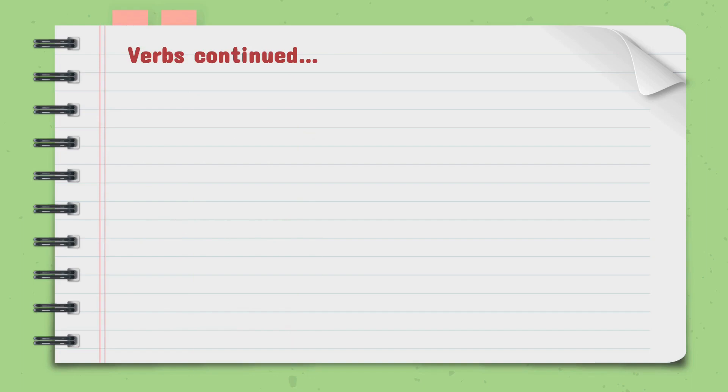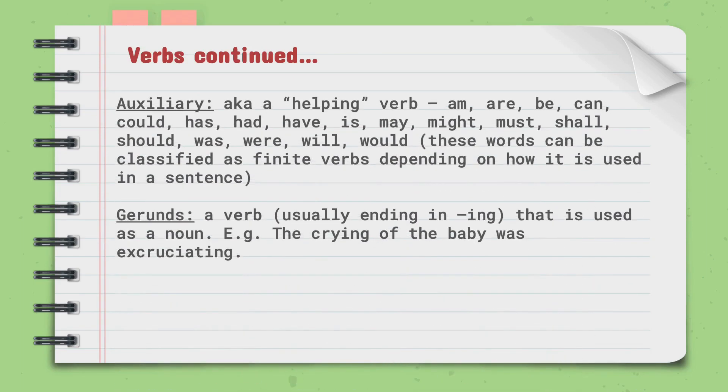More on verbs. Auxiliary verbs are helping verbs. Examples could be: am, are, be, can, could, has, had, have, is, may, might, must, shall, should, was, were, will, and would. These words can be classified as finite verbs, depending on how it is used in a sentence. Gerunds are verbs that are usually ending in ing. This is used as a noun. For example, the crying of the baby was excruciating.